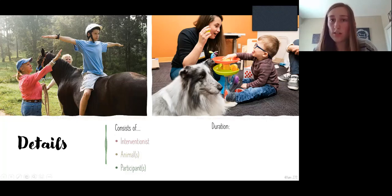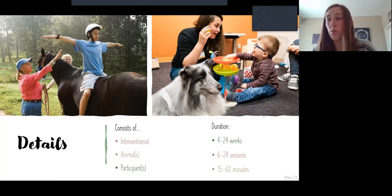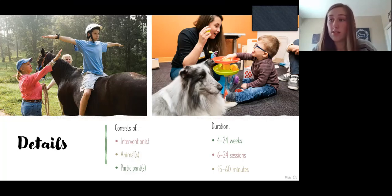Typically, there's no standardized protocols for AAI, but the average length is around 12 weeks with 13 sessions, and that can last anywhere from 15 to 60 minutes. Across nine studies, the presence of animals increased social interaction in individuals with autism.